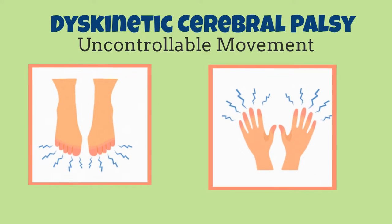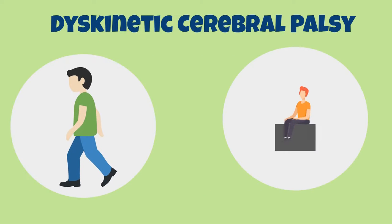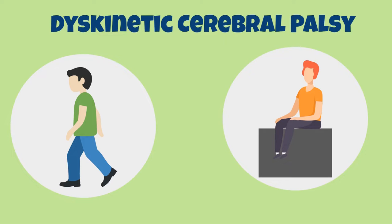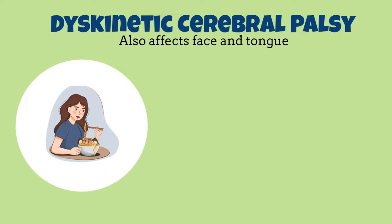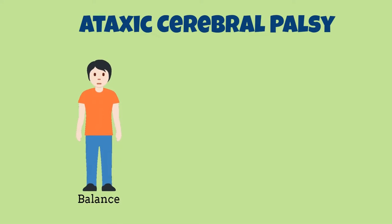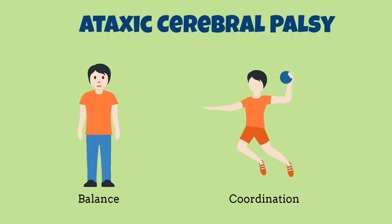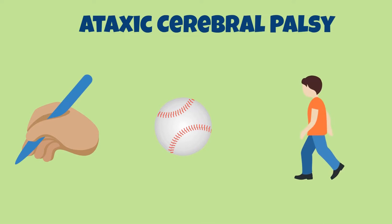Dyskinetic cerebral palsy usually causes uncontrollable movement in your arms and legs, making it difficult to walk and sit. This form of cerebral palsy can also affect your face and tongue, making it difficult to swallow and talk. Finally, ataxic cerebral palsy results in difficulty with balance and coordination. This can affect your ability to complete different tasks such as writing, picking up an object, or walking.